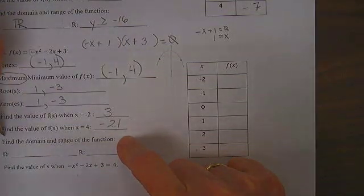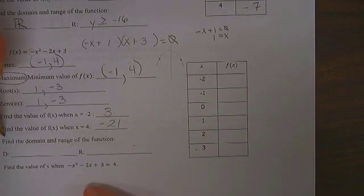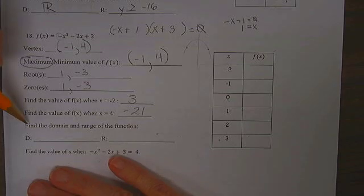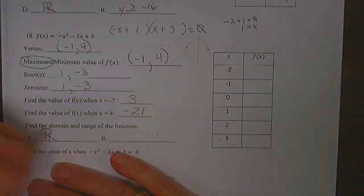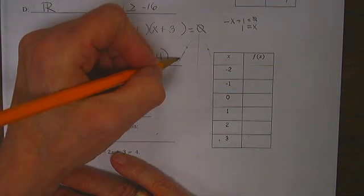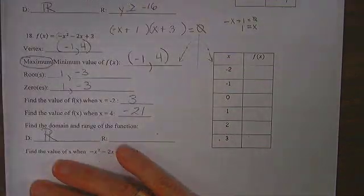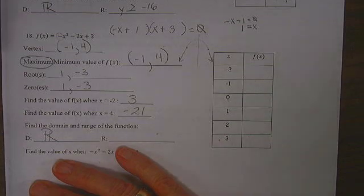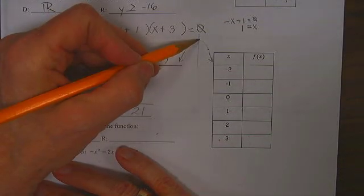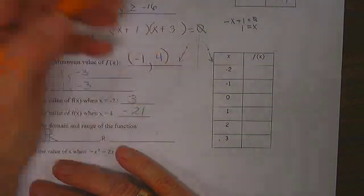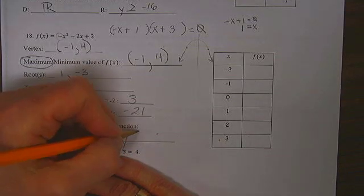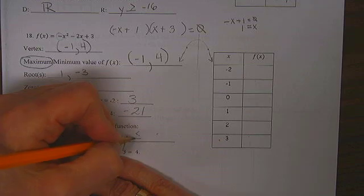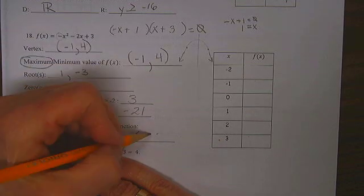Find the domain and range. Well, the domain is all real numbers because my graph goes forever. What's my range? Well, range is all possible values of y less than or equal to the vertex.